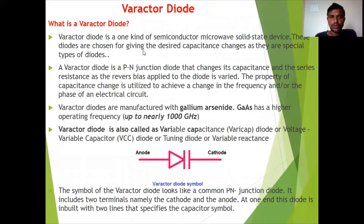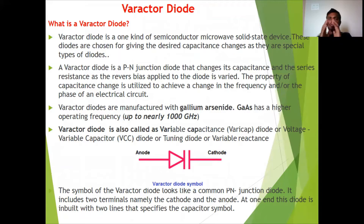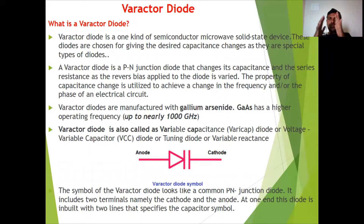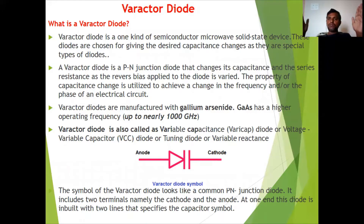The next topic is the varactor diode. A varactor diode is operated in the reverse bias condition. Whenever reverse bias is applied and increased, the depletion region extends. The p-type material is considered one electrode and the n-type is considered the other electrode, with the depletion region increasing the distance between those two plates.